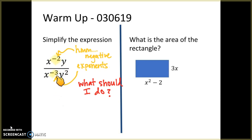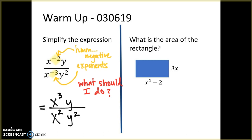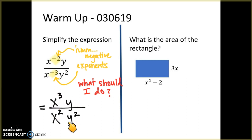For the first question, I want you to think about: here I have negative exponents — what exactly should we do when we see negative exponents? How can I rewrite this expression so that the exponents are positive? If you said we need to move the x to the negative power to the denominator so it becomes positive 2, and x to the negative third to the numerator so it becomes positive 3, you are correct.